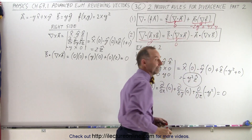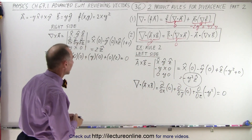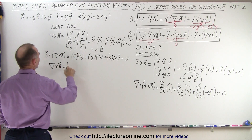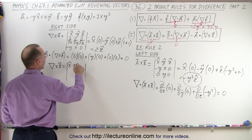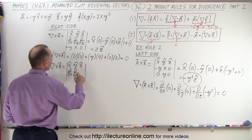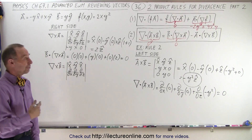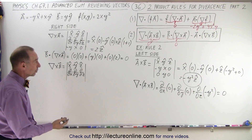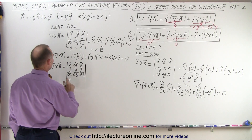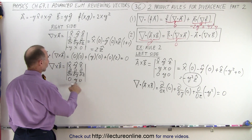Now we need the curl of B. By doing all these example problems, we're becoming proficient at taking the divergence, the curl, and the gradient — so it's a good idea to do lots of examples like this. The curl of B uses X, Y, and Z unit vectors with the components of B: 0, Y, and 0.